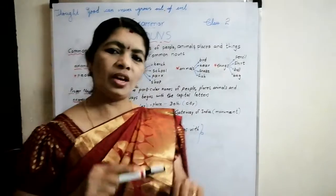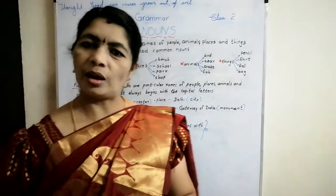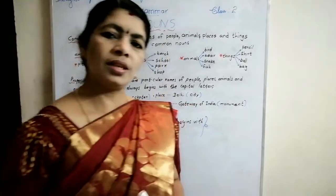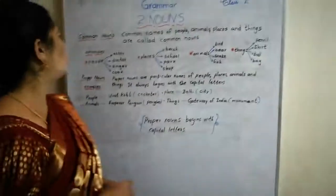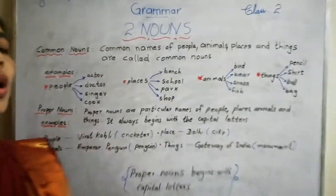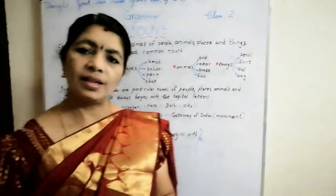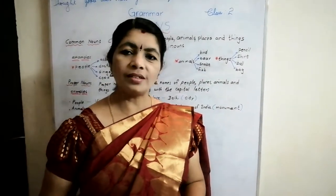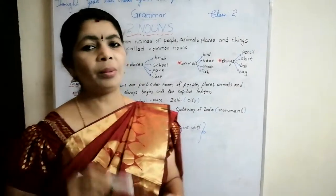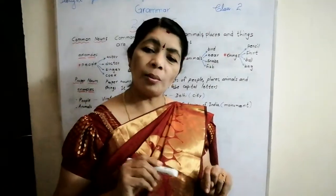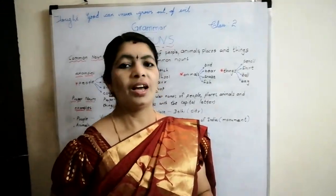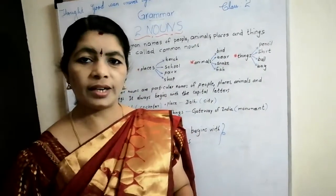Today we are going to learn types of nouns. Let us learn about common nouns. A common noun is a name of a person, place, animal or thing. We have to remember one thing: a common noun begins with a small letter.